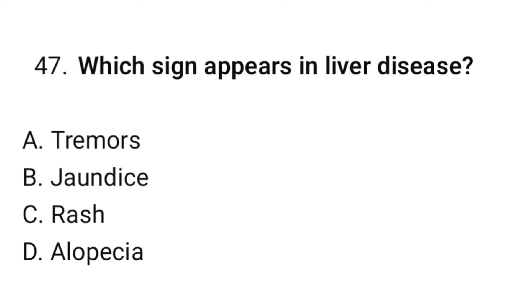Question number forty-seven: Which sign appears in liver disease? The correct option is B: Jaundice.